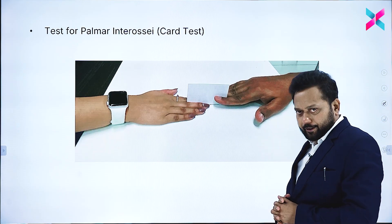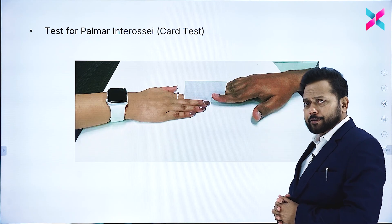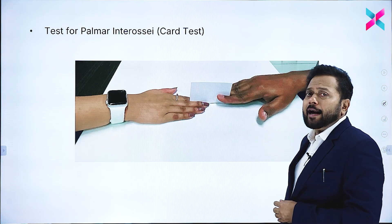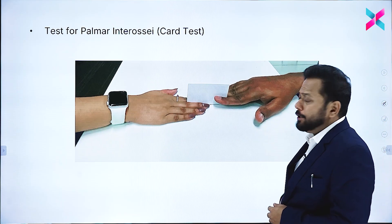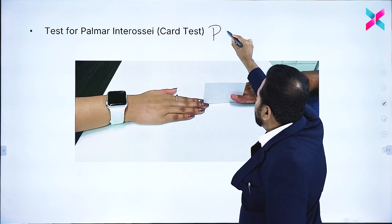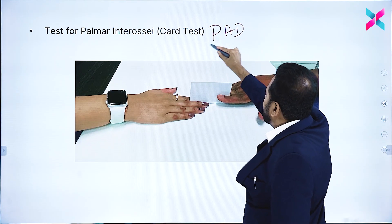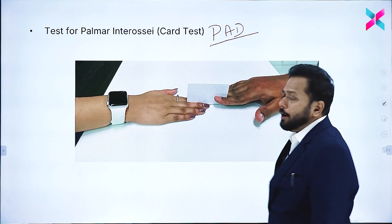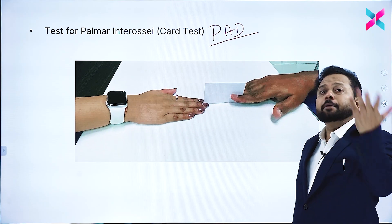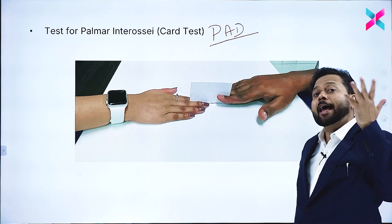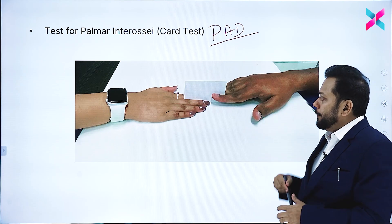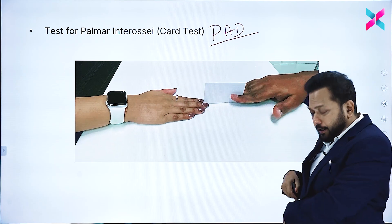Next comes the palmar interossei test, which is called the card test. The action of palmar interossei is adduction — the mnemonic is PAD: Palmar interossei ADduction. Dorsal interossei is abduction — the mnemonic is DAB: Dorsal interossei ABduction. So remember: PAD and DAB.